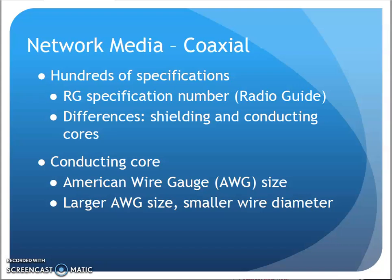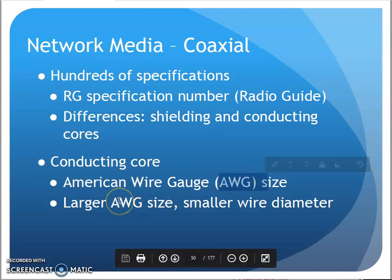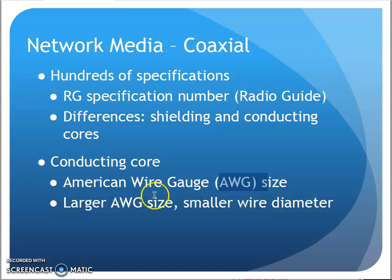There are many different specification numbers — RG, radio guide specification numbers — with differences in shielding, conductor, insulator, and size. My conducting core is measured in American Wire Gauge, AWG. The larger that number is, the smaller the diameter. So going from an 18 to a 22, my conductor in the middle just got smaller. 22 to 24, conductor got even smaller. They seem almost backwards in numbers.